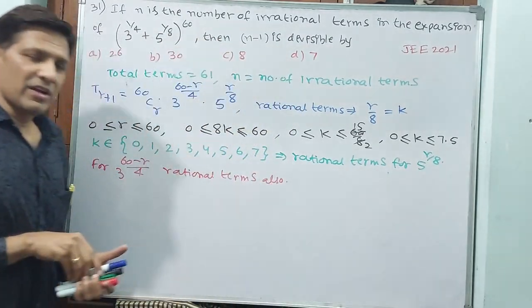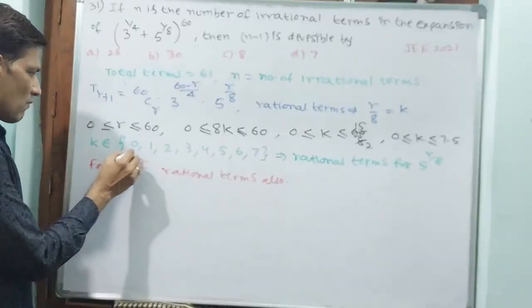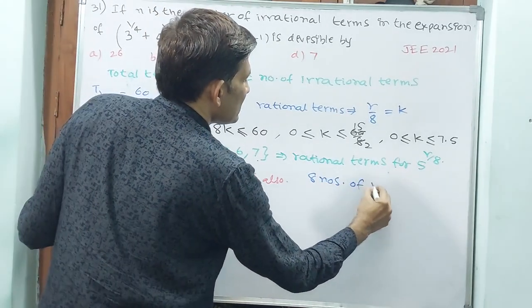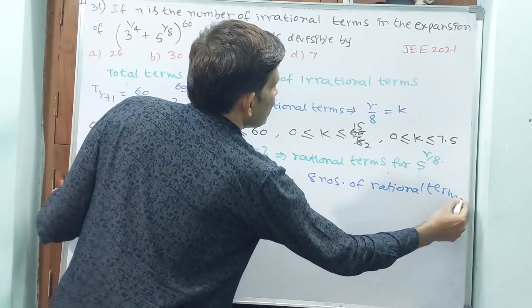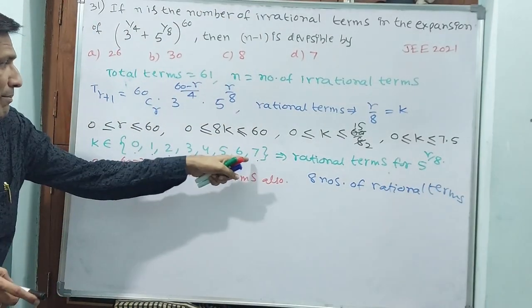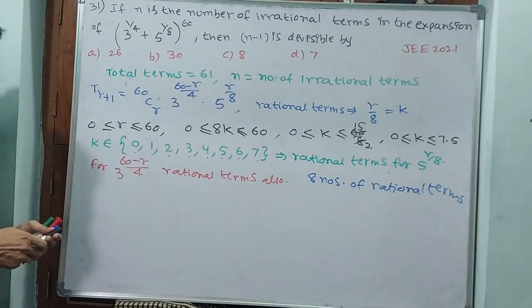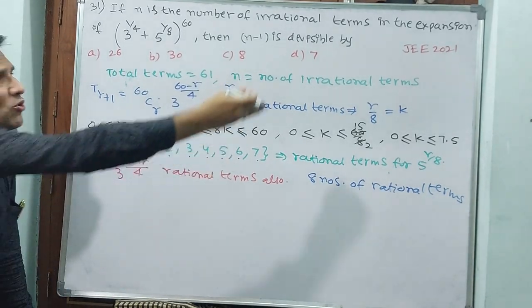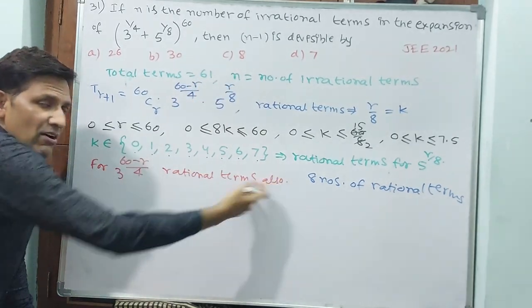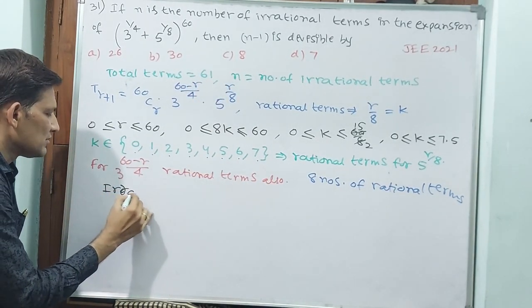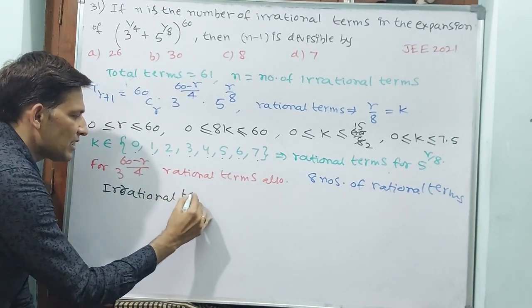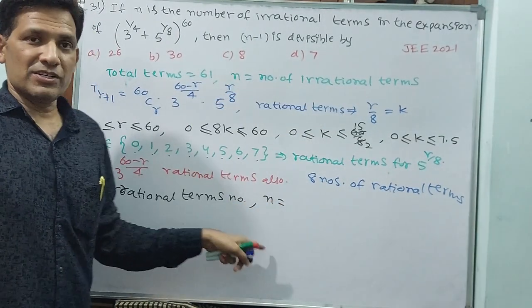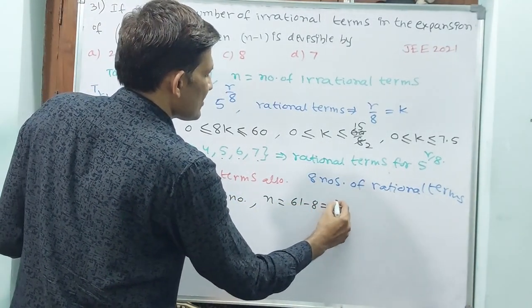Now, how many rational terms have come? 1, 2, 3, 4, 5, 6, 7, 8 — that's 8 rational terms. Because these 8 r-values work for 5^(r/8) and 3^((60-r)/4) both ways. So total 8 rational terms are coming. Then the remaining all are irrational terms. Total terms are 61 minus 8 — all are irrational. So n is equal to number of irrational terms = 61 minus 8 = 53.